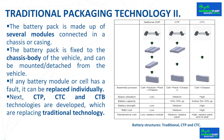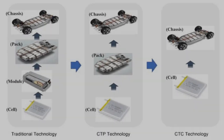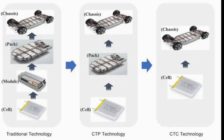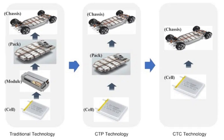The battery pack is made up of several modules connected in a chassis or casing, achieving a voltage of 400 volts or 800 volts, which is the voltage used in electric vehicles. The battery pack has spacers, beams, top and bottom covers, connectors, control protection systems, the battery management system, a cooling system, etc.